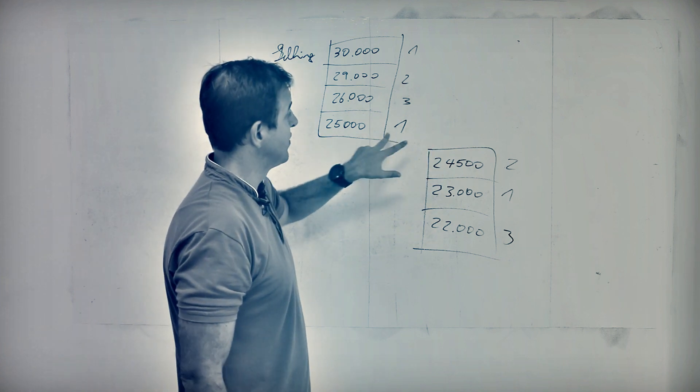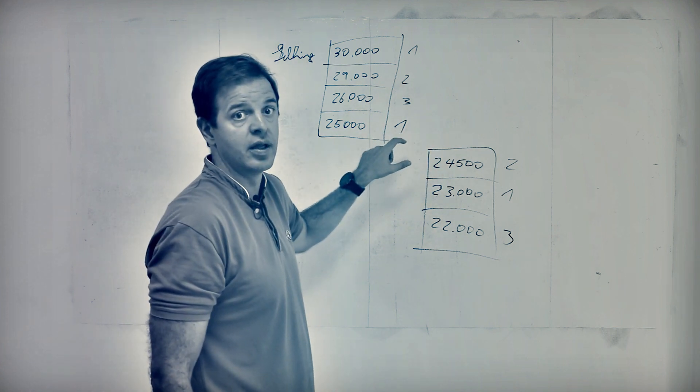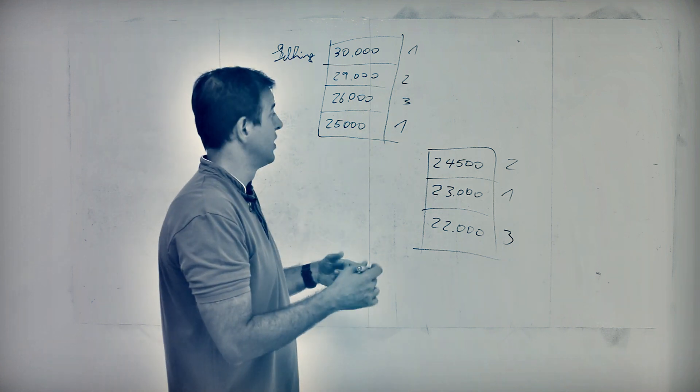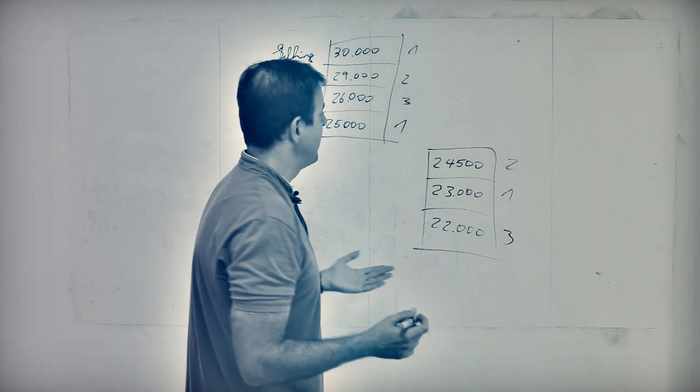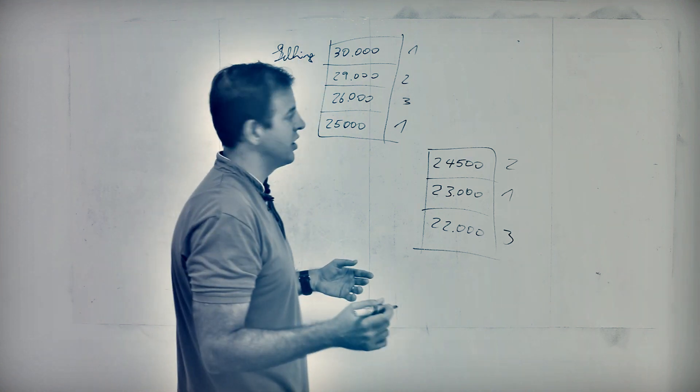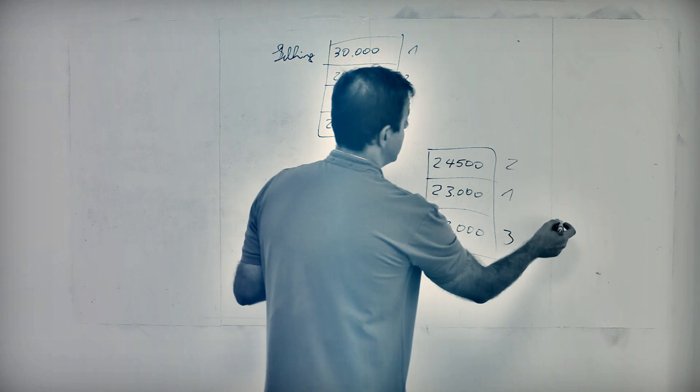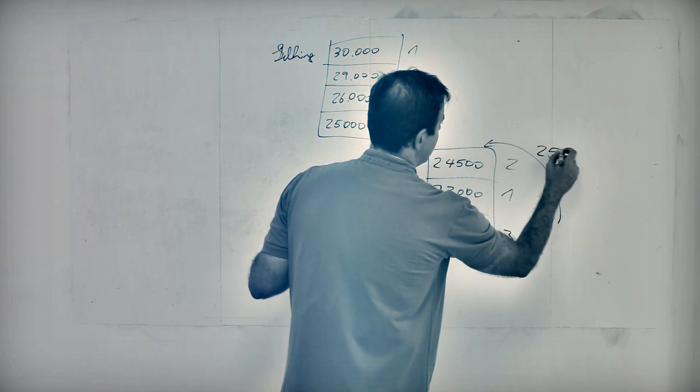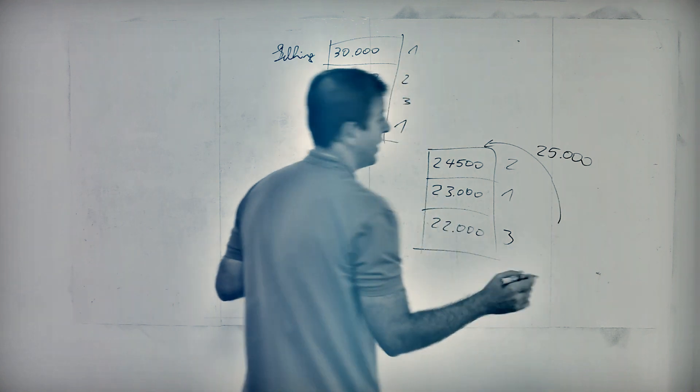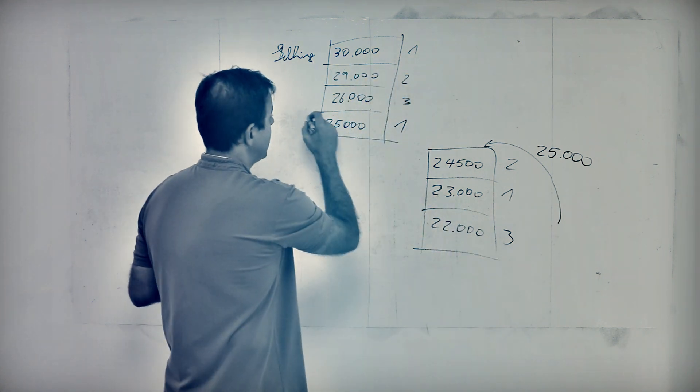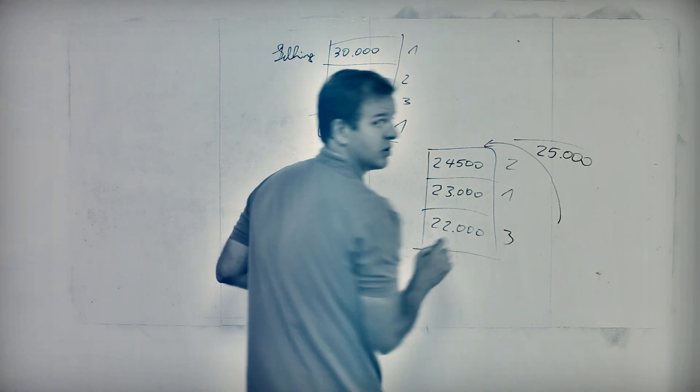So until we get somebody who crosses the spread, there's going to be no transaction. So time's going by and this thing doesn't move. And then at some point somebody, oh shit, my car just broke down. I need a Ford Fiesta pronto. So he submits a market order for £25,000 to buy it. And boom, this guy's gone. This guy's gone.